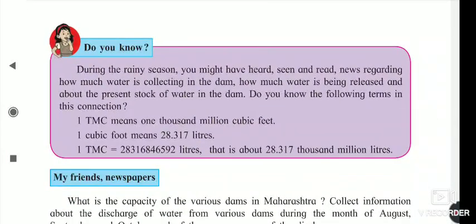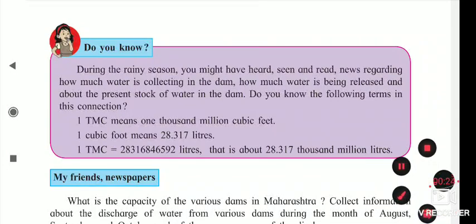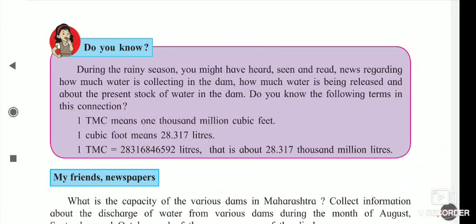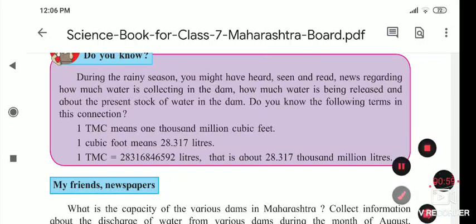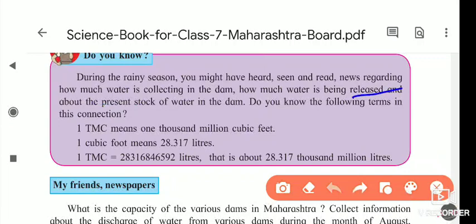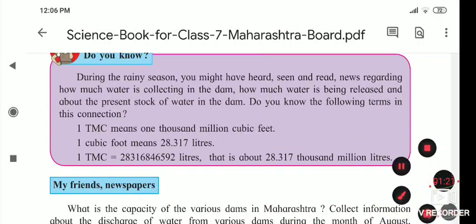As you know, this is a rainy season, and where there is heavy rainfall, you see the dams are there. Their capacities — how much capacity, how much the dam is filled — these types of messages are coming on TV and in the newspaper. During the rainy season, you might have heard, seen, or read news about how much water is collected in the dam, how much water is there, and how much water is being released about the present stock.